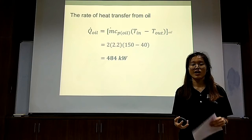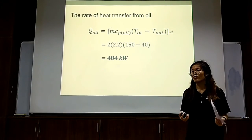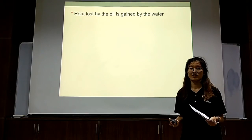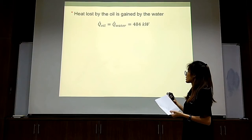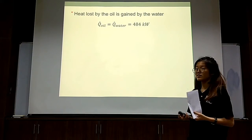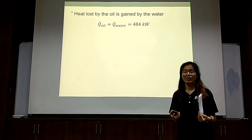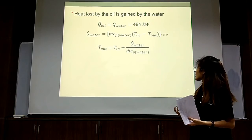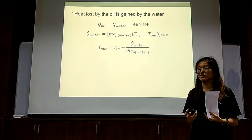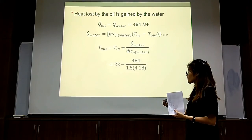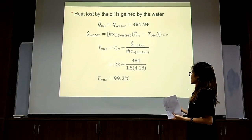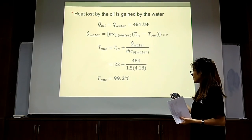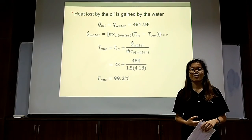The next part asks us to find the exit temperature of water. Noting that the heat lost by the oil is gained by the water, the rate of heat transfer to the water is also 484 kW. Using the same equation Q = m_dot × Cp × ΔT, but substituting the water properties and solving for the exit temperature, we find that the exit temperature of the water is 99.2°C. That's all from me. Thank you.